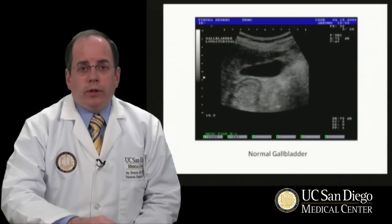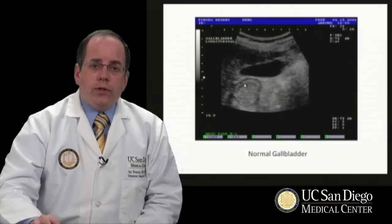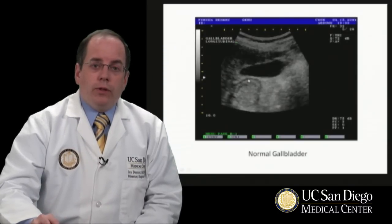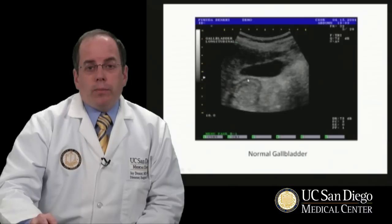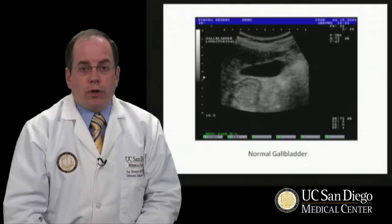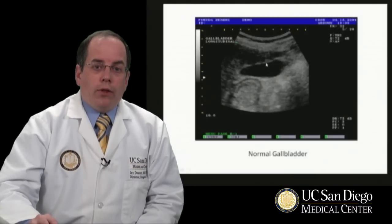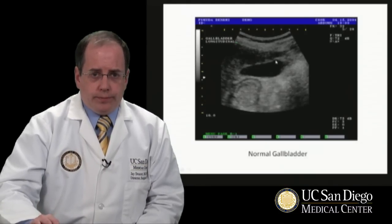Here's an example of a still from an ultrasound looking at a normal gallbladder. The gallbladder is easily visualized as this dark object in the center of the field, which has some post-enhancement of the cystic structure. The gallbladder wall is not thickened and there's no evidence of stones.